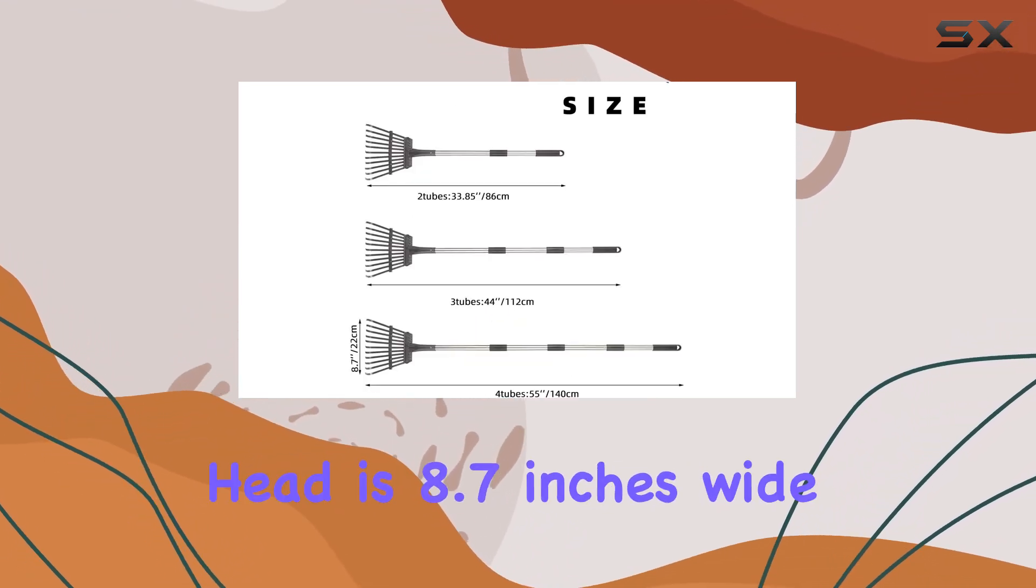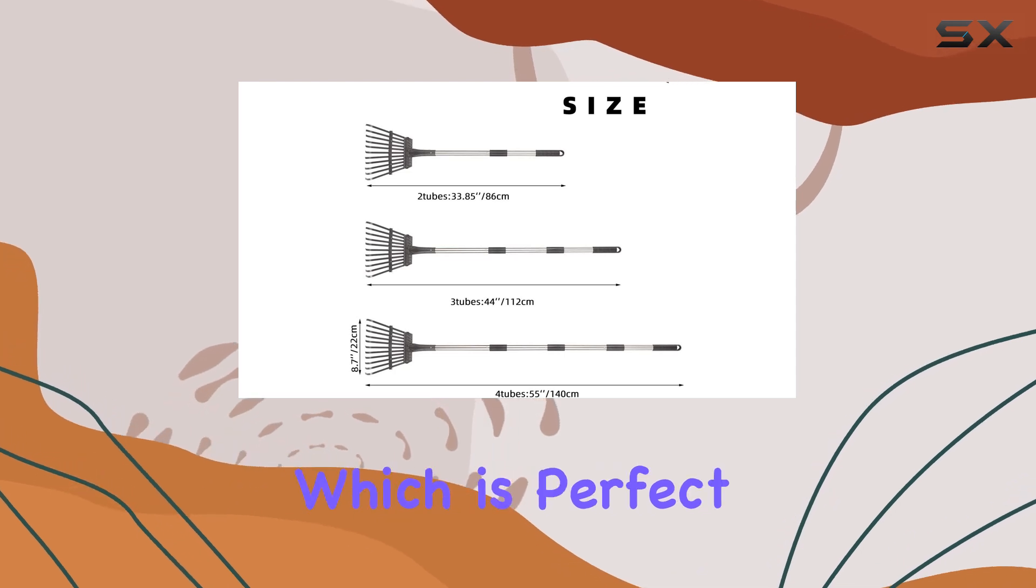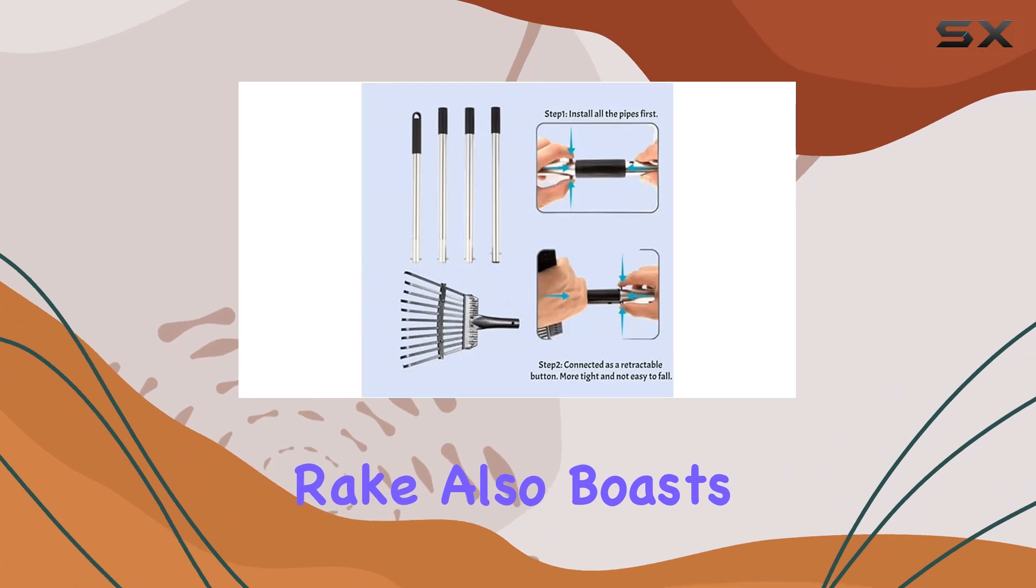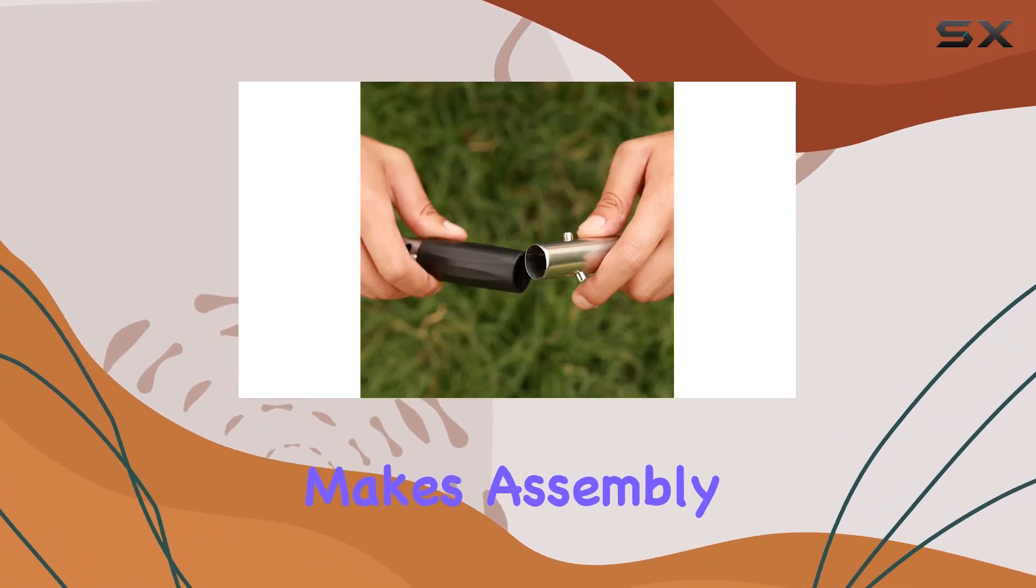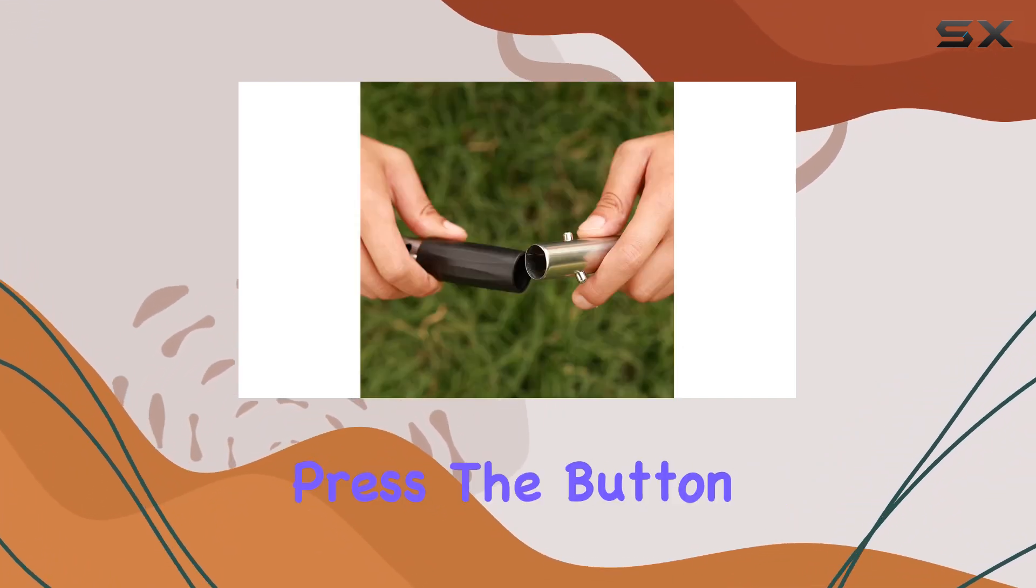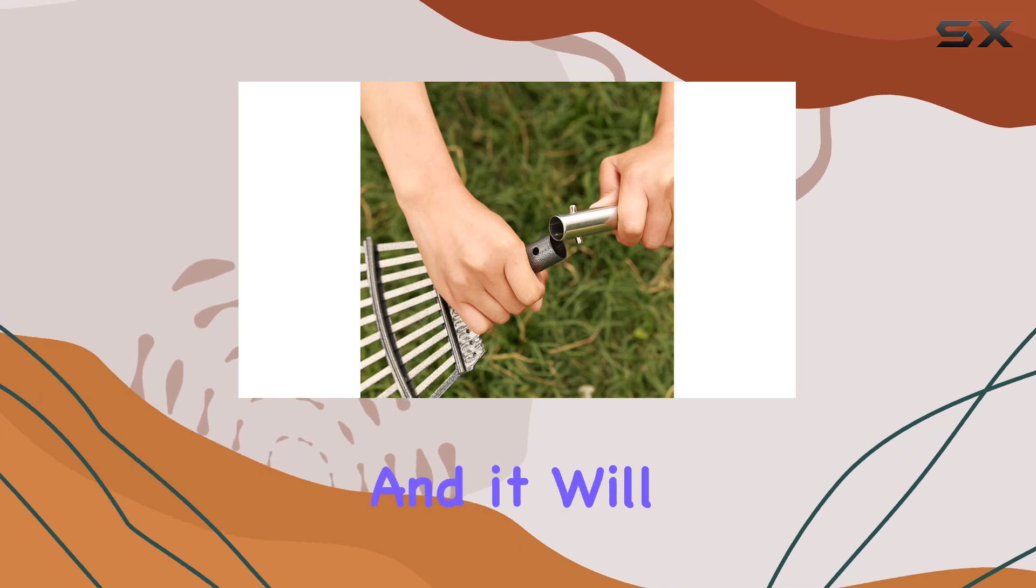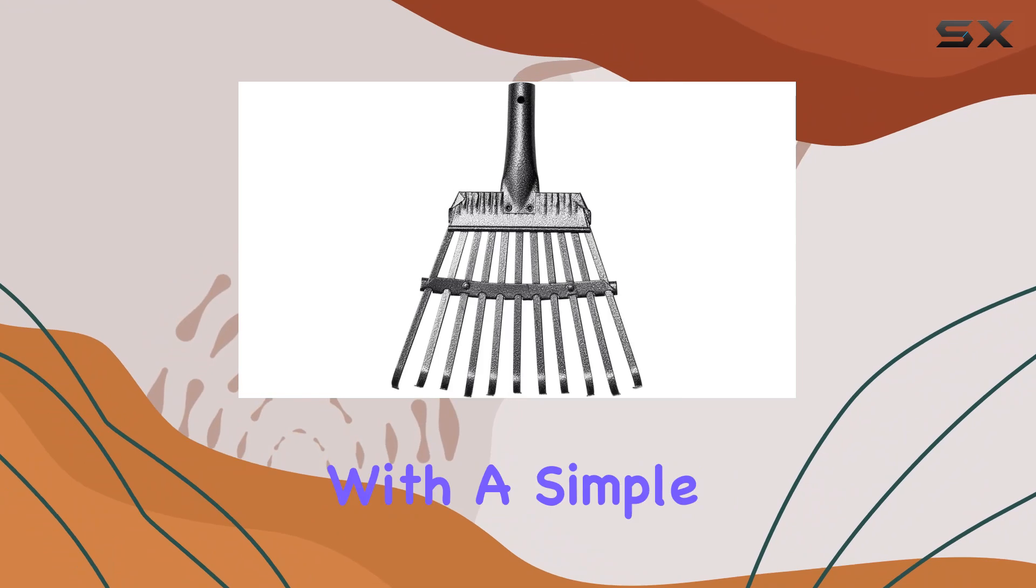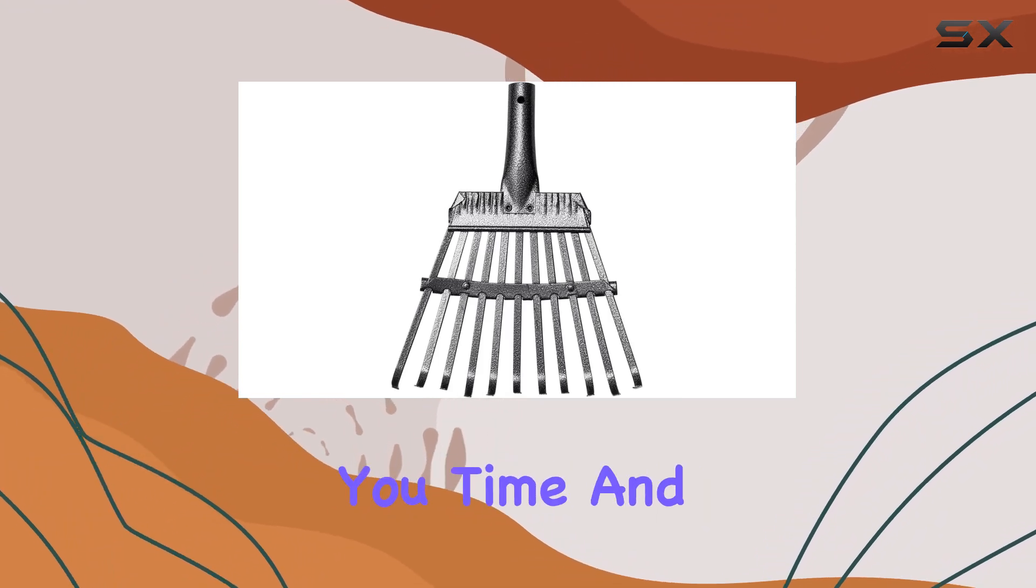The 11-tine head is 8.7 inches wide, perfect for efficiently gathering leaves and debris. The rake also boasts a snap buckle design that makes assembly a breeze. Simply press the button to connect the head and handle, and it will automatically lock into place. The handle can be screwed in with a simple rotation, saving you time and effort.